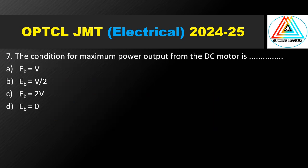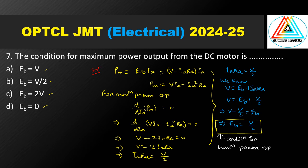Question number 7. The condition for maximum power output from a DC motor is — options: Eb equal to V, Eb equal to V by 2, Eb equal to 2V, and Eb equal to 0. For a DC motor, mechanical power Pm equals Eb times Ia, and since Eb equals V minus IaRa, we get Pm equals V·Ia minus Ia²·Ra.